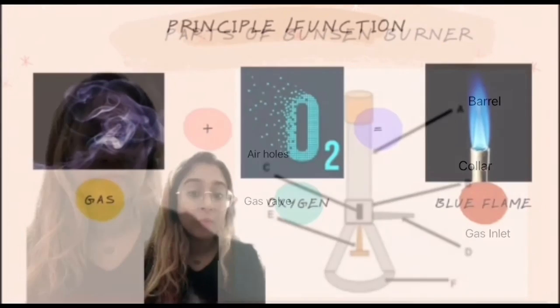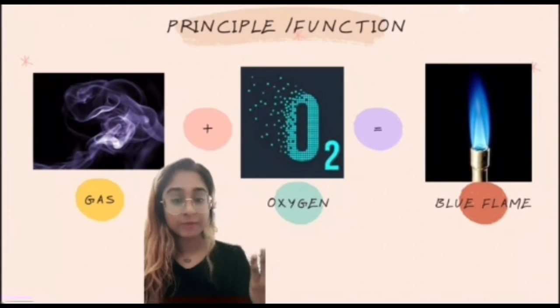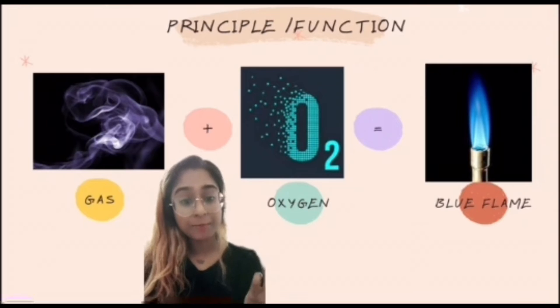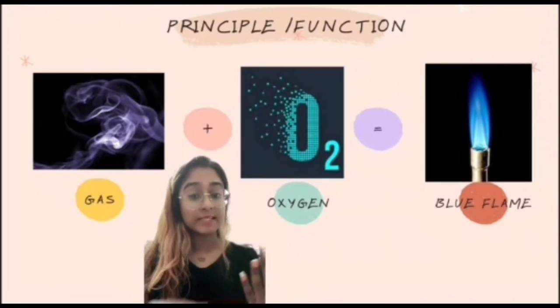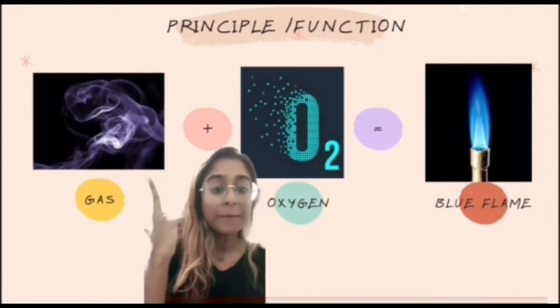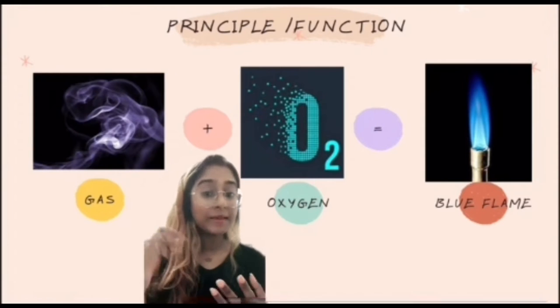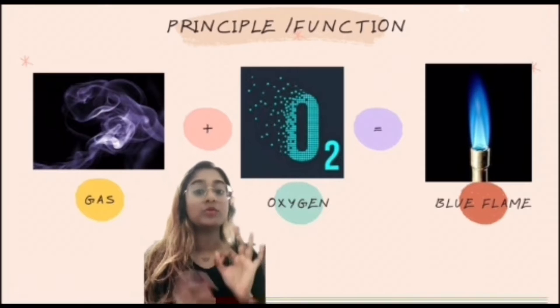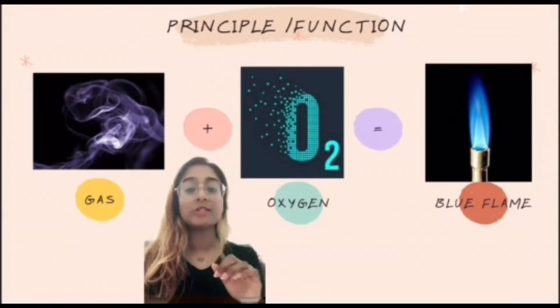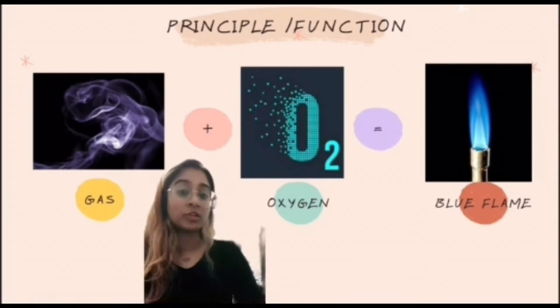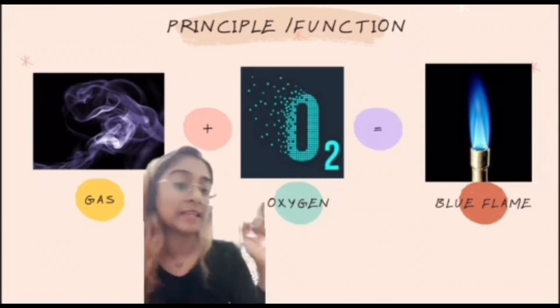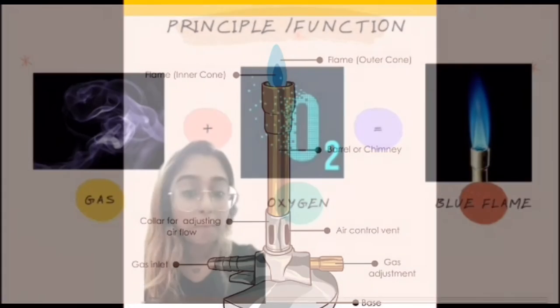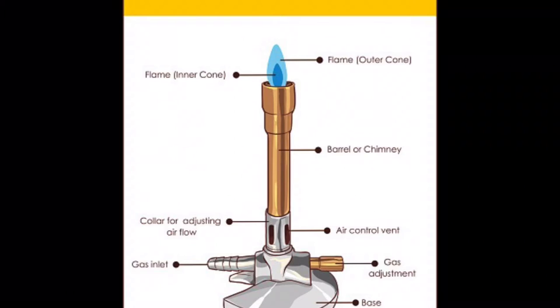Now let's take a look at the principle of Bunsen burner. Once the Bunsen burner is connected to a source of fuel such as methane gas, it can be ignited with a spark. Incoming gas reacts with oxygen in a one-two-three ratio to produce a blue flame that comes out of the top of the barrel, which you can see in the picture there. Adjusting the gas valve on the Bunsen burner changes the volume of gas flow.